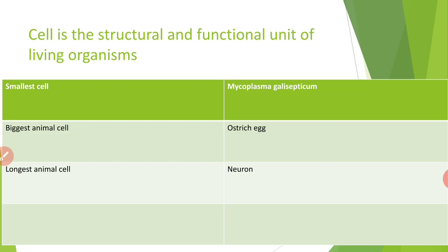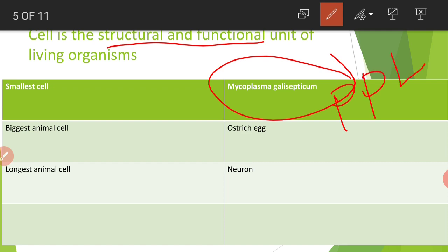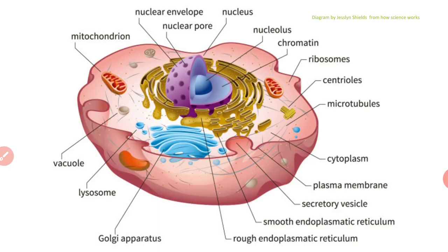Cell is the structural and functional unit of the entire living kingdom. The smallest cell is Mycoplasma gallisepticum, also called PPLO — pleuro-pneumonia-like organisms. The biggest animal cell is the ostrich egg cell. The longest animal cell is the neuron, and the longest neuron is found in the giraffe. This is a typical animal cell.